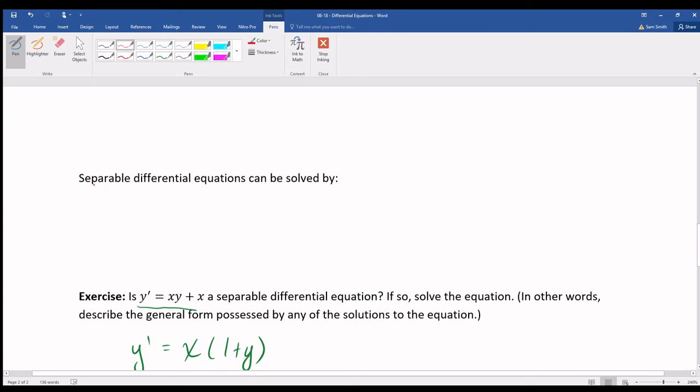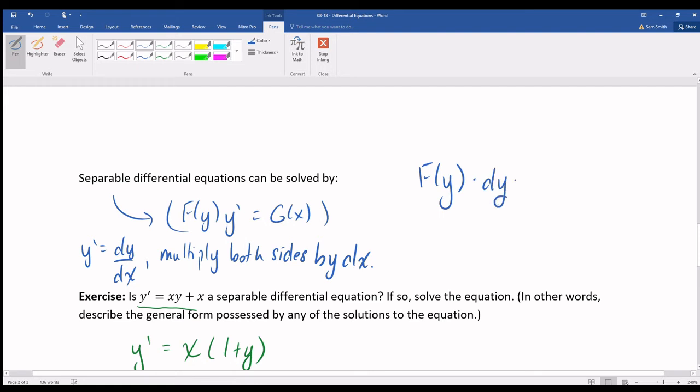Now, several differential equations, which once again look like this, can be solved in the following technique. Think of y prime as dy over dx. Multiply both sides by dx. And that will give you f of y times dy equals g of x dx. And then integrate both sides. Integrate the left-hand side. Integrate the function of y with respect to y. And integrate the function of x with respect to x.